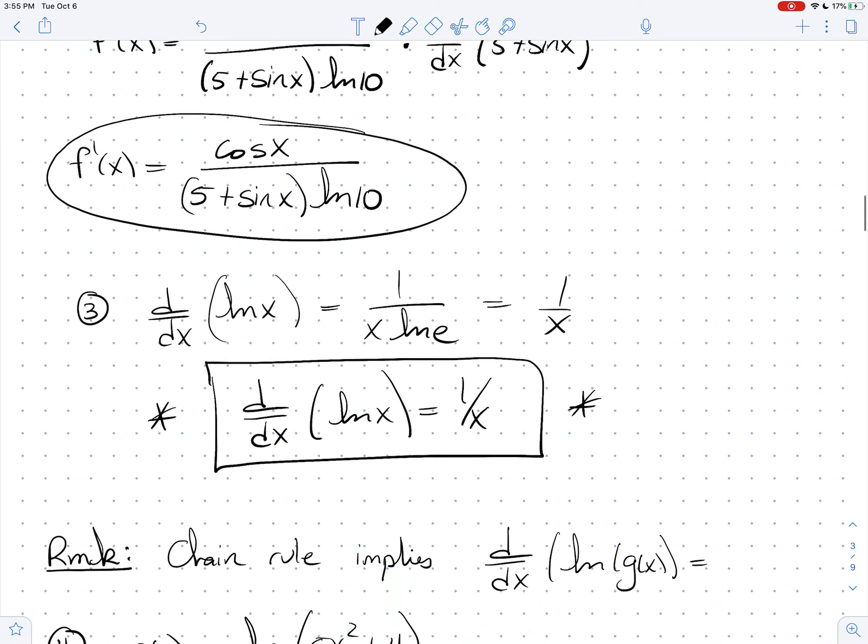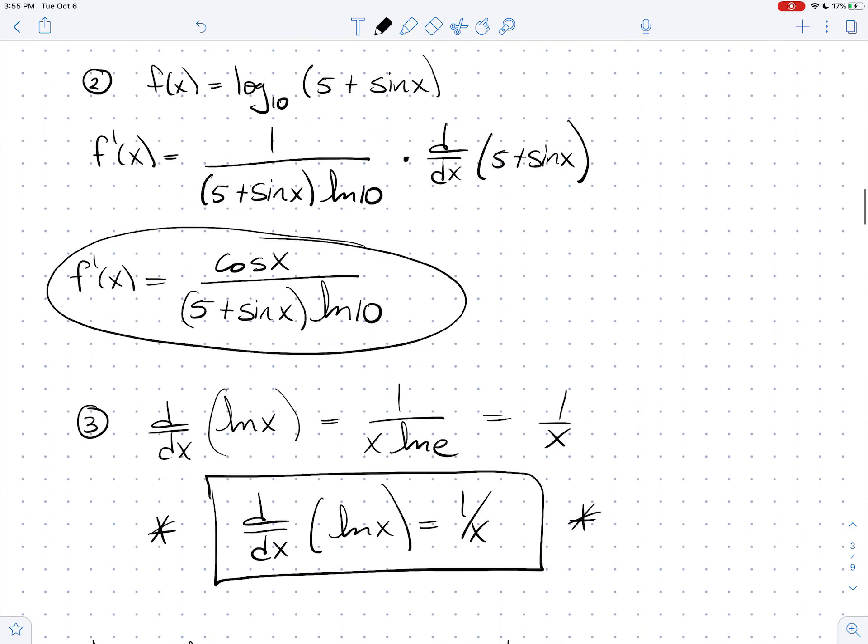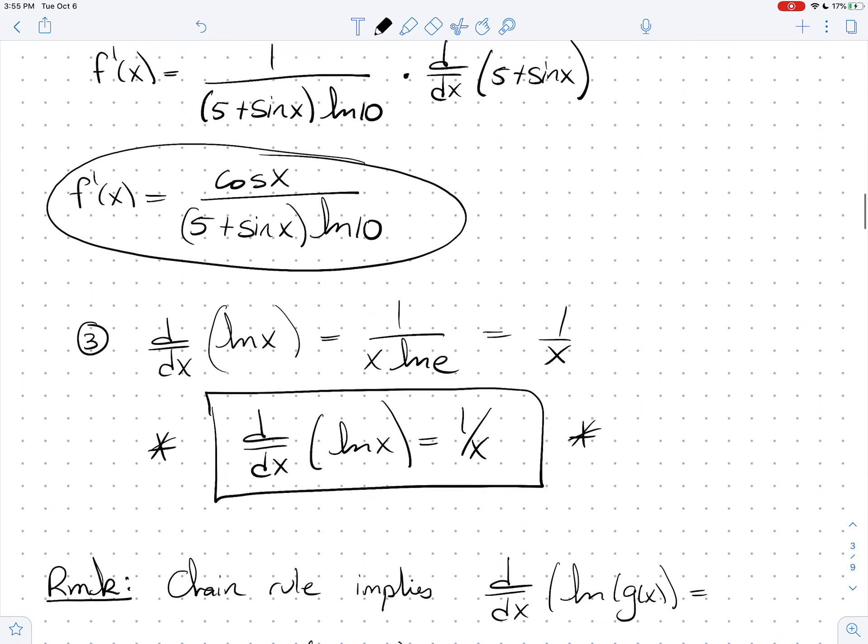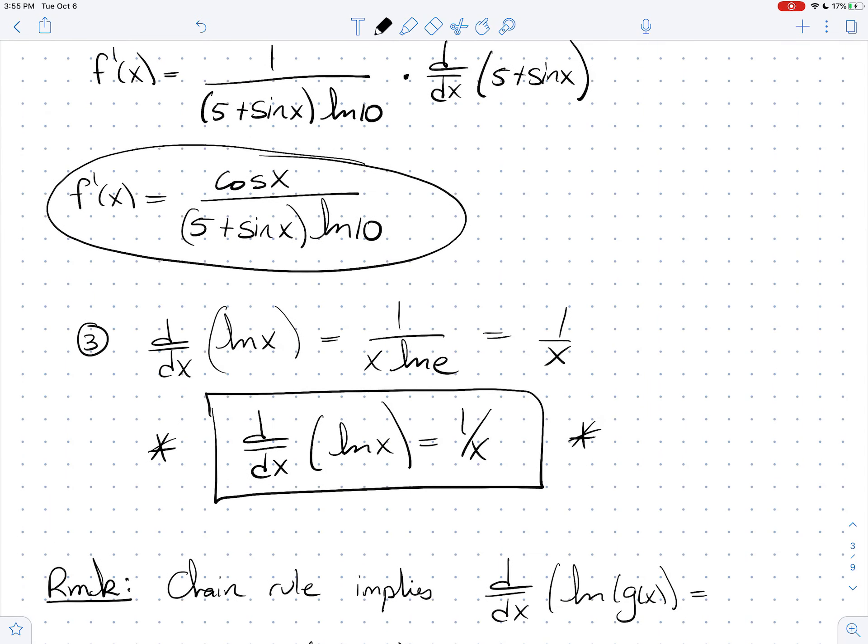Okay, so a quick remark. In general, we did a chain rule in example 2, but I want to just jot down the general formula with you. The chain rule implies that when you take the derivative of natural log of g of x, you always are going to get out g prime of x over g of x. 1 over x, plug in the inside, that's 1 over g, times the derivative of the inside, which is g prime. So it's always going to be g prime over g.